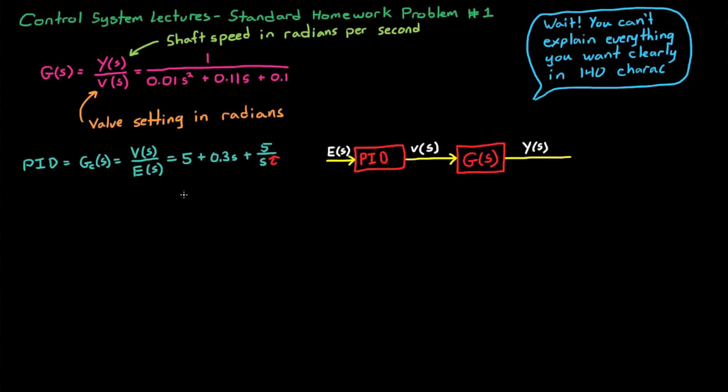And you can see that this is the transfer function of a PID controller because we have the proportional part, 5, the integral part, 5 over tau, and the derivative part, 0.3. But the proportional and the derivative part are fixed. We're told in the problem that they have to be these values. So keep in mind as we go through this problem that we're really only tuning one parameter, tau, in this PID controller.